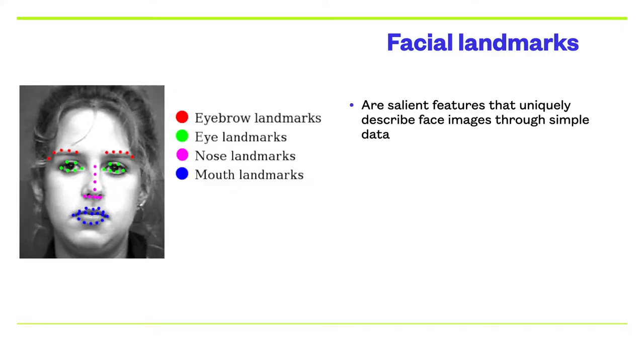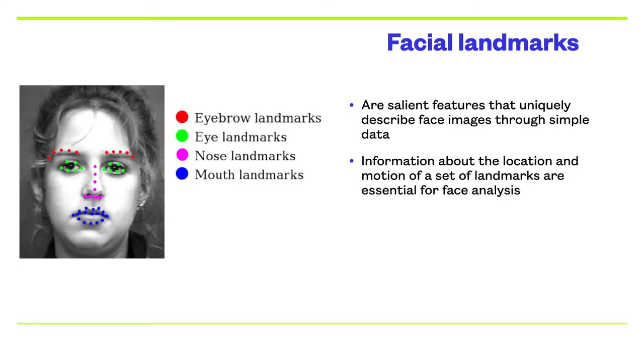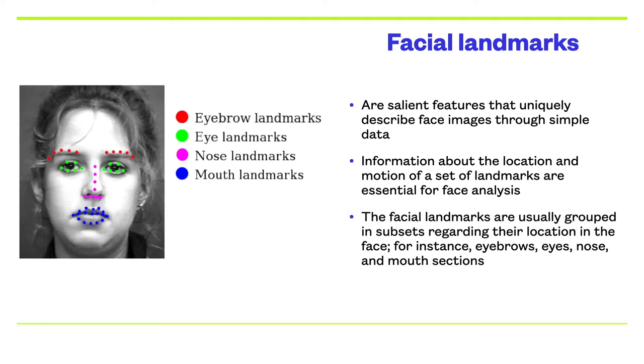Facial landmarks are salient features that uniquely describe face images through simple data. Information about the location and motion of a set of landmarks are essential for face analysis. The facial landmarks are usually grouped in subsets regarding their location in the face, for instance: eyebrows, eyes, nose, and mouth sections.